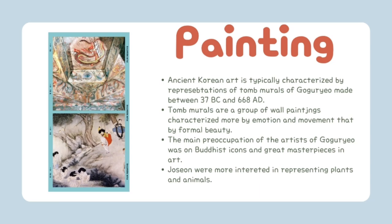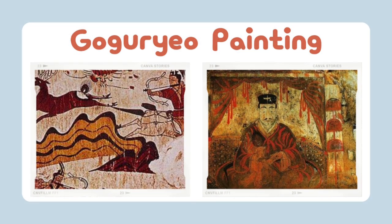South Korean art is typically characterized by representations of tomb murals of Goguryeo, made between 37 BC and 668 AD. These murals are wall paintings characterized more by emotion of movement than by form or beauty. Outlines are bold and forceful to heighten the effect of movement and animation. Representations in these murals reflect how early Koreans viewed humanity in the entire universe, as well as how painters express artistic sensibilities.